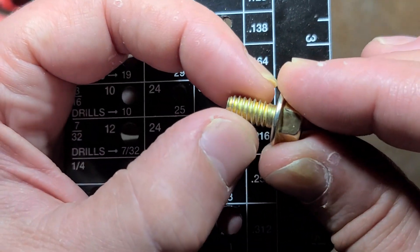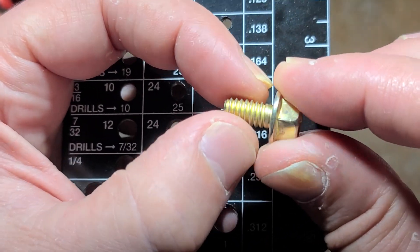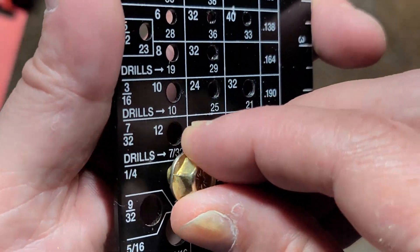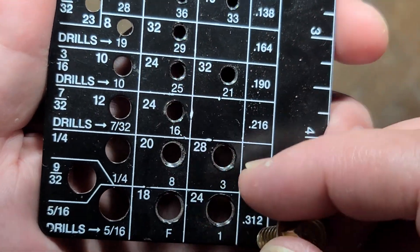the bolt or fastener, it's always going to be nominal size. So like on this quarter inch 20, the threads are going to be quarter inch. It's the hole that's smaller.